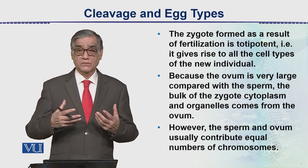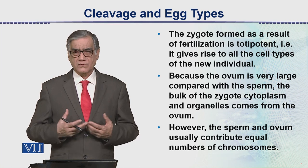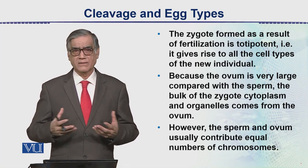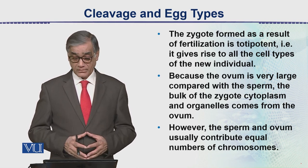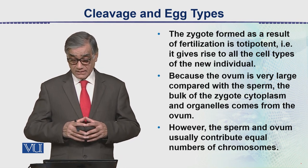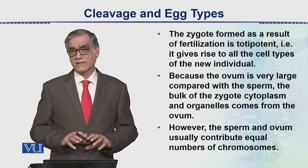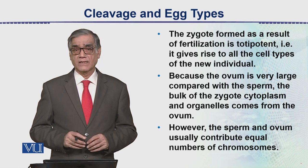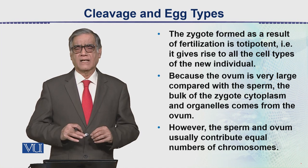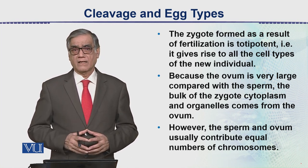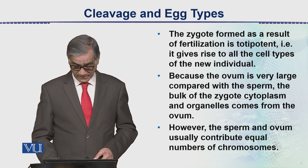As we know, the egg is large compared to the sperm. Inside the egg there is cytoplasm, organelles — which are in addition to normal cells — and there are also proteins, specialized type of proteins. However, the sperm and the ovum usually contribute equal numbers of chromosomes. But the cytoplasm contribution is different, because the cytoplasm in the sperm is very less, whereas in the egg there is quite an appreciable amount of cytoplasm containing so many substances.